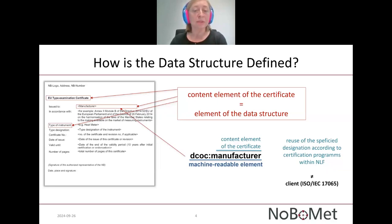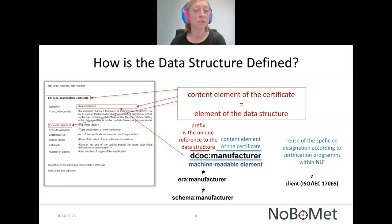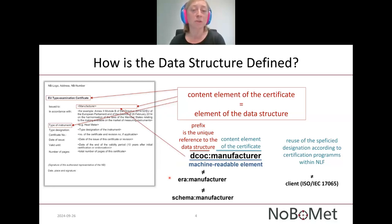The second part of the element is called the prefix. This is the unique reference to the DCOC data structure. This prefix states that the manufacturer element is part of the DCOC data structure and no other, and this manufacturer element shall not be equated with another manufacturer element from other data structures.